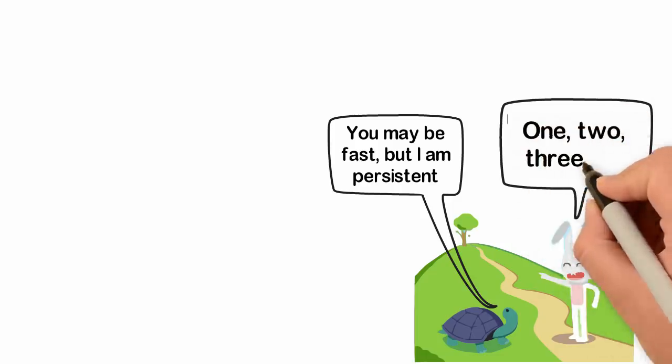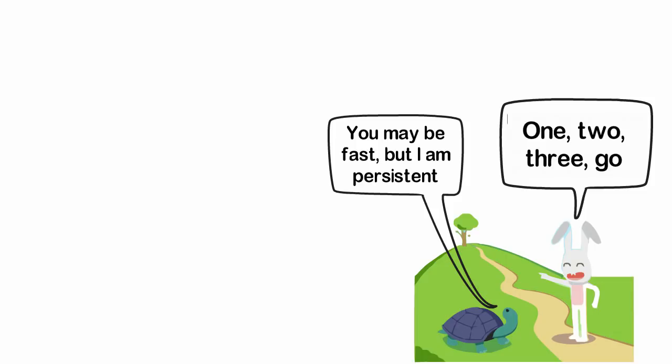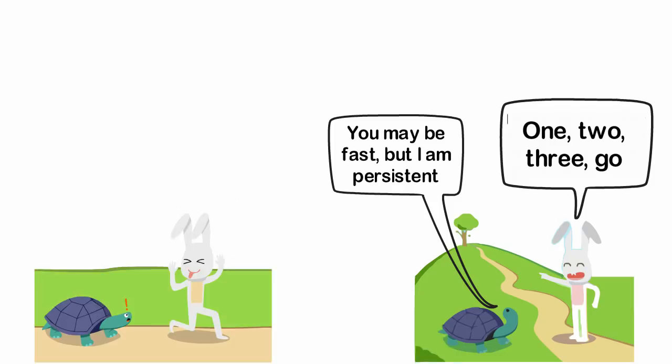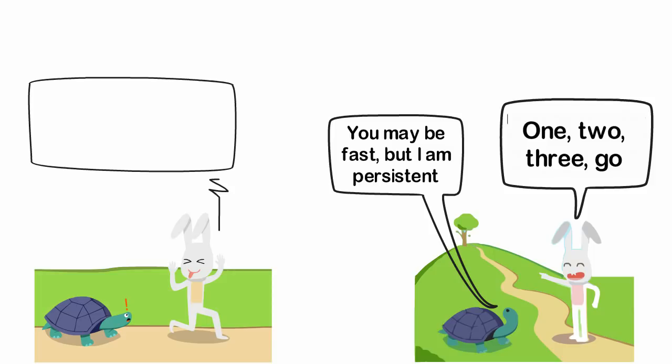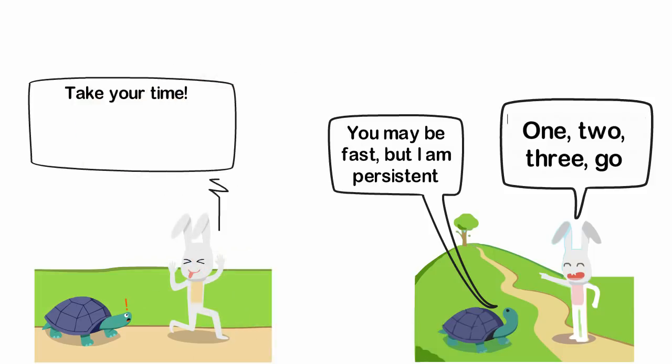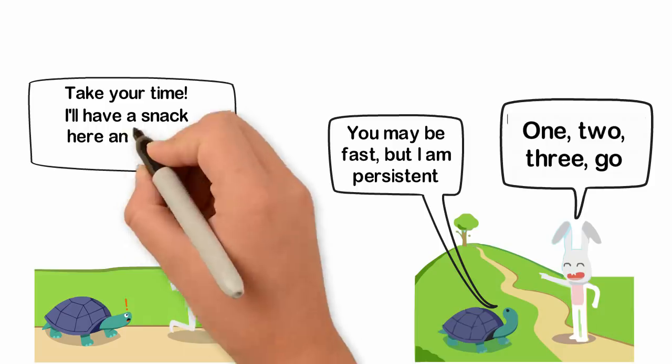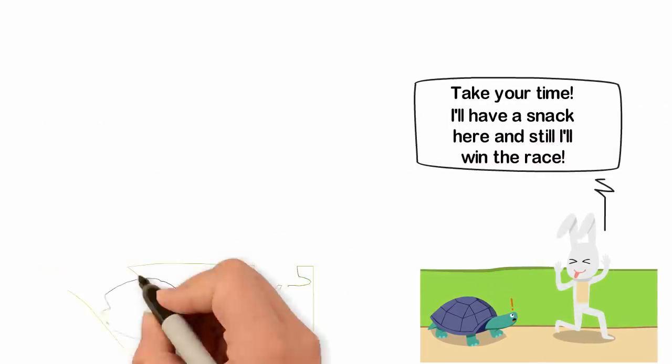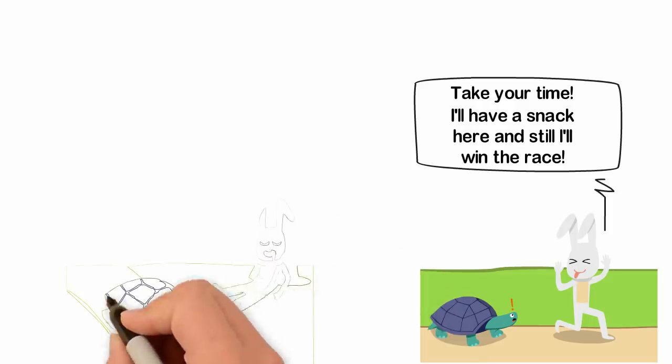One, two, three, go, said the hare and they started running. The hare was a long way in front of the tortoise when he saw a field of cabbages. He looked back and almost couldn't see the tortoise. Take your time, he shouted to the tortoise. I'll have a snack here and still, I'll win the race. When he finished his breakfast, the hare looked around to see how far the tortoise had gone. He still hadn't passed halfway.